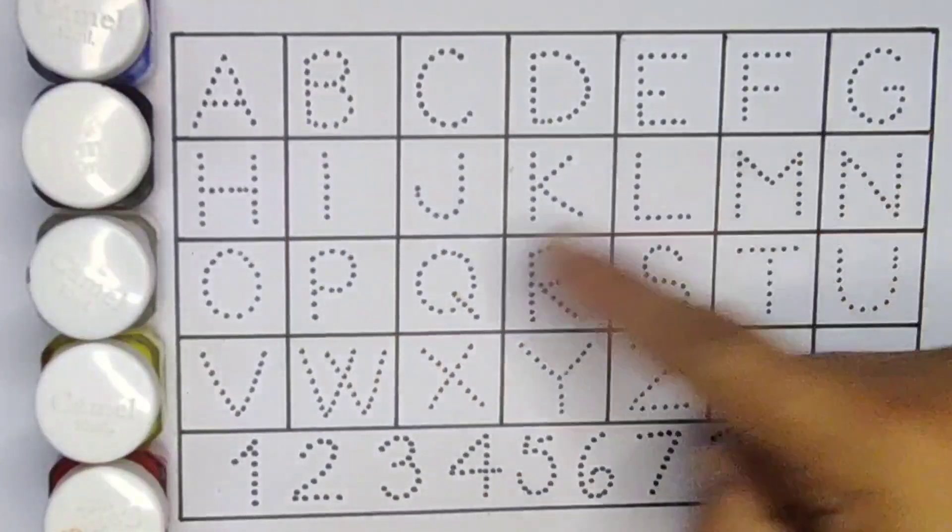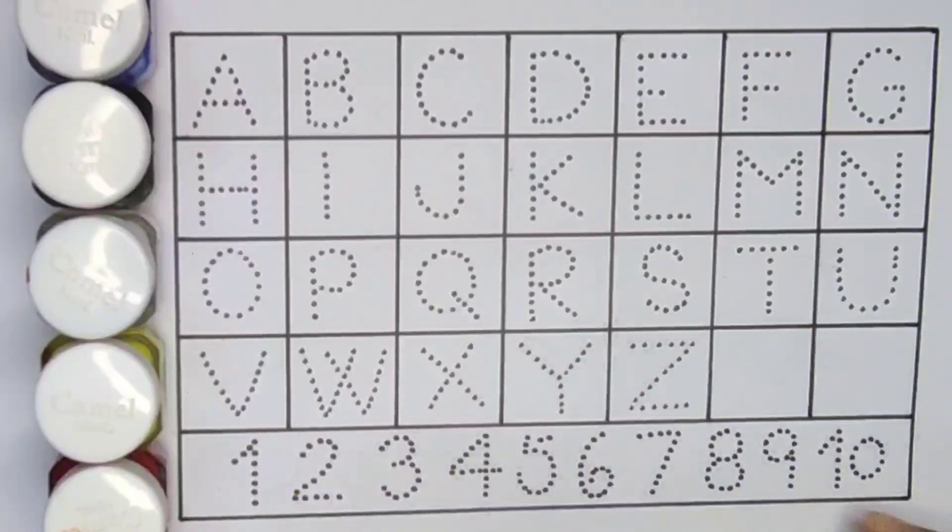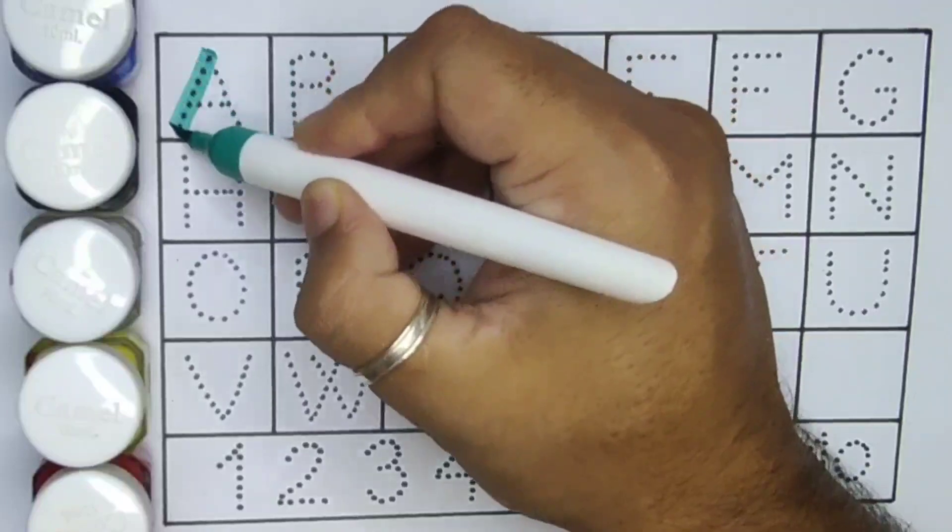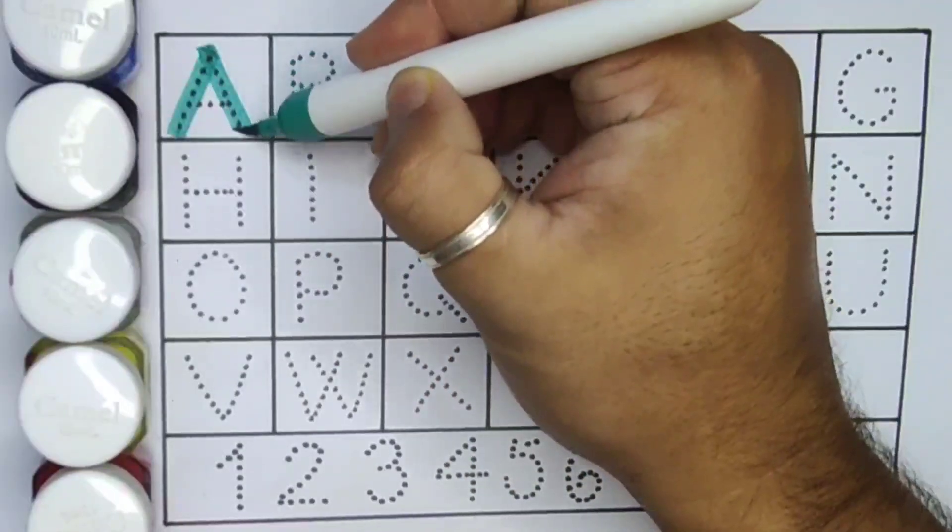Now let's learn the alphabet A to Z and numbers counting 1 to 10. First A, A for alligator.